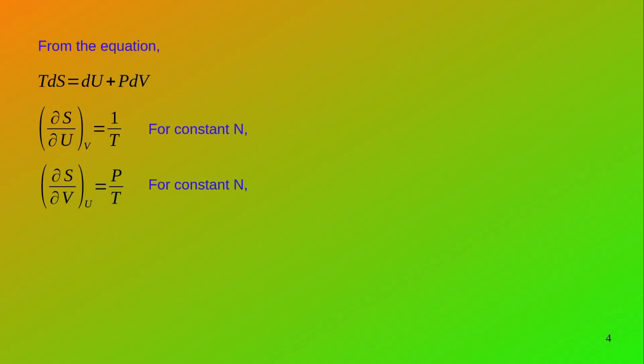Now for this equation, if we apply conditions of constant n — that is constant number of moles, which is natural because a closed system cannot have mass added — and also constant volume, then the change in entropy with respect to the change in internal energy is 1/T. The change in entropy with respect to change in volume, holding the internal energy constant, is P/T.